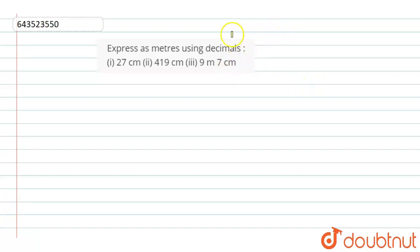Hello everyone, look at the question given. Express as meters using decimals. Our first question is 27 cm, second one is 419 cm, third one is 9 m 7 cm.